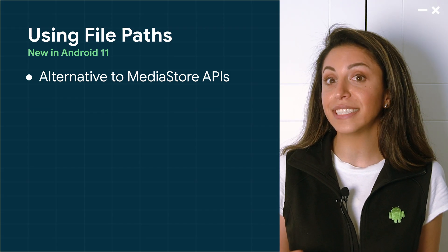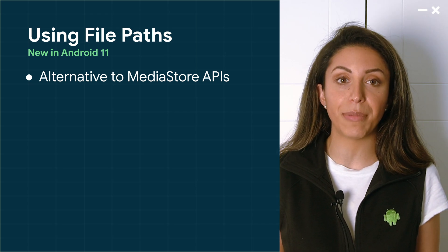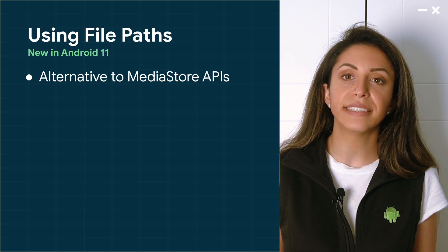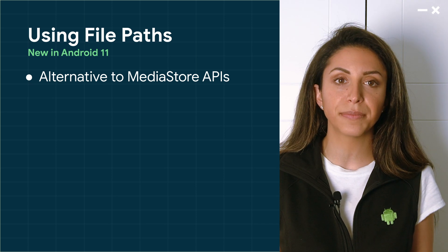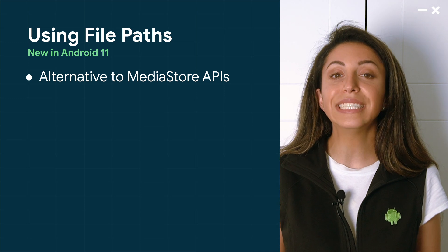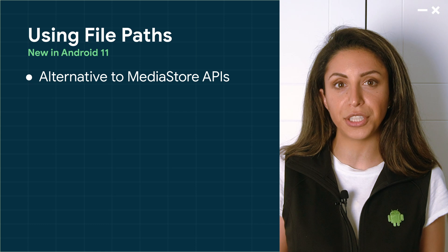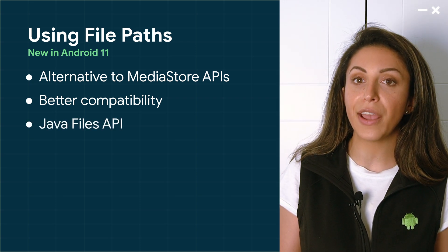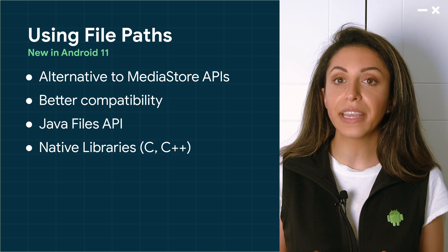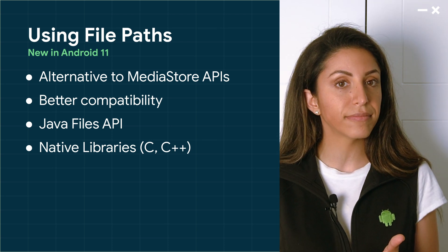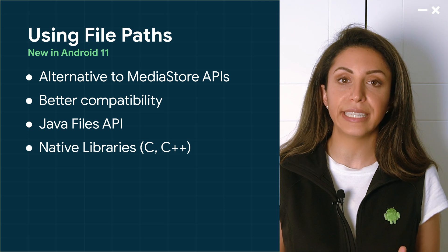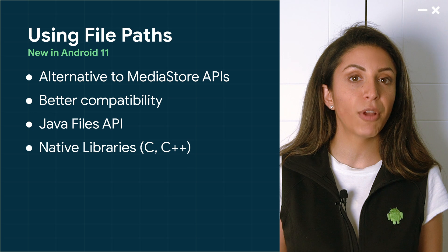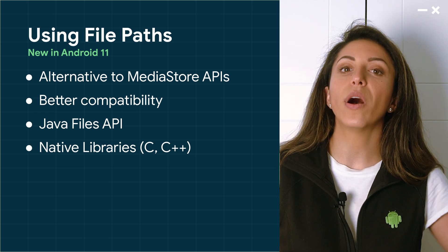With scoped storage enabled on Android 10, apps were only able to access shared files using MediaStore APIs, a collection of APIs specifically designed for working with indexed files in shared storage. These APIs identify files using file descriptors rather than local file paths. MediaStore is a rich, efficient, and useful set of APIs that we will continue to innovate. So for most apps, this is still the best solution for working with shared files. However, your feedback showed us that disallowing APIs that use file paths, like Java Files API or native C and C++ libraries, caused significant compatibility issues between Android Pie and Android 10.